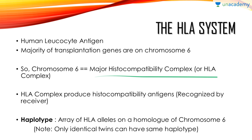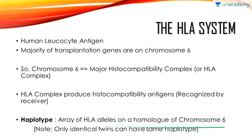One more thing is haplotype — the array of HLA alleles on a homologue of chromosome 6. Regarding haplotype, only identical twins can have the same haplotype. So you just need to know what HLA is — human leukocyte antigen — and on which chromosome the genes are located.